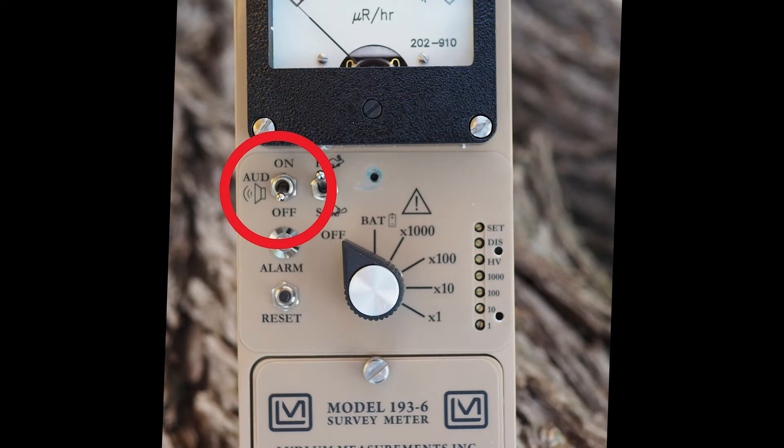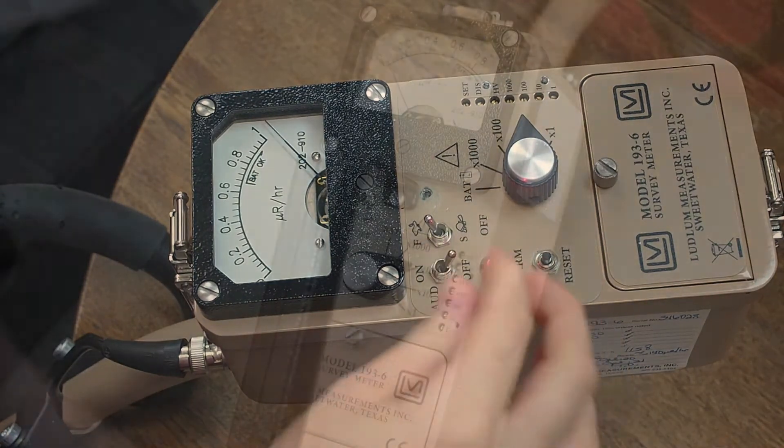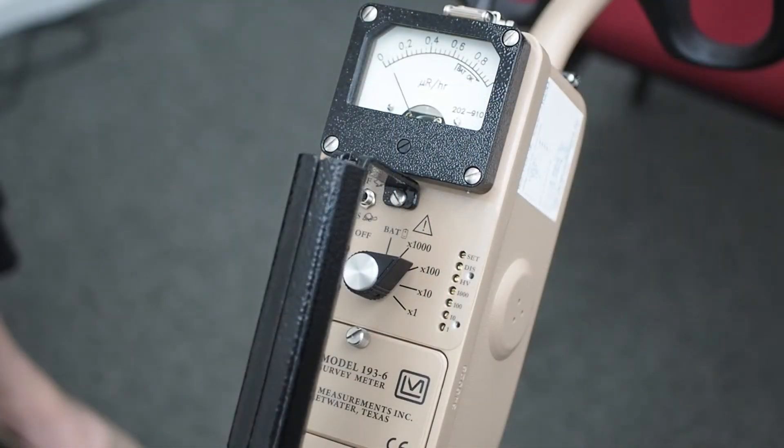The audio on/off toggle switch is used to silence the clicks coming from the speaker located on the left side of the instrument. The frequency of the clicks is relative to the rate of the incoming pulses.